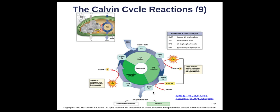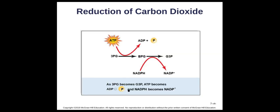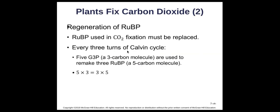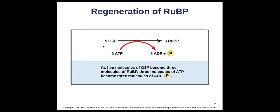The math works because G3P is a three-carbon molecule and RuBP is a five-carbon molecule: five times three equals fifteen, and three times five equals fifteen, so we need three cycles. You'll have five G3P giving you three RuBP.